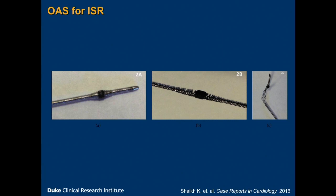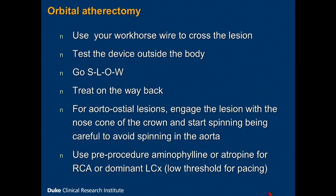So if you have in-stent restenosis — which we don't see a lot anymore — or an hourglass stent, use laser or rotational atherectomy. For the step-by-step procedure: generally, we tend to use our workhorse wires across a lesion and then change out for the viper wire using a microcatheter. You can wire a lesion with your viper wire directly if you're confident. Test the device outside the body, and make sure that the crown is lifted up off the drape or the towels — the last thing you want is to ablate the towels and get a bunch of fibers inside the coronary.